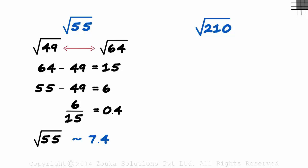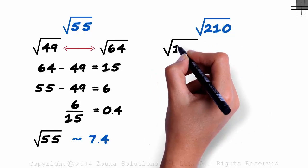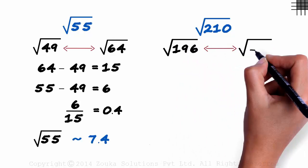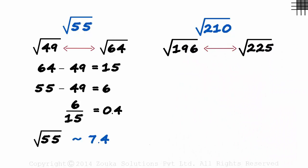How far are you? Root 210 lies between root 196 and root 225. 196 is 14 squared and 225 is 15 squared. Root 210 lies between 14 and 15.